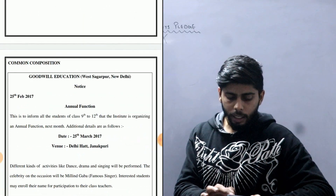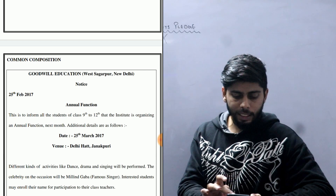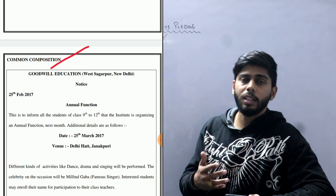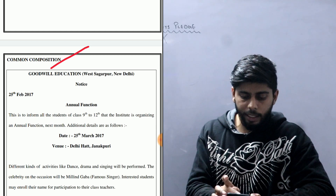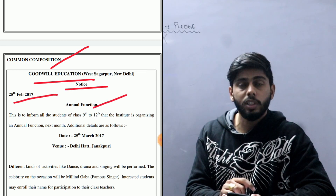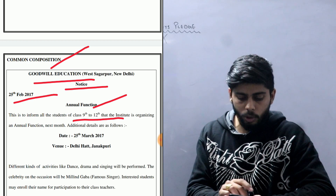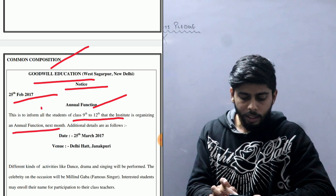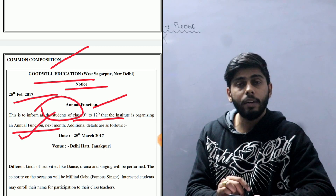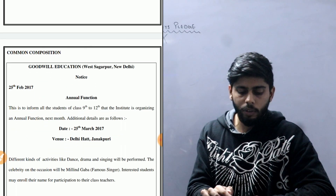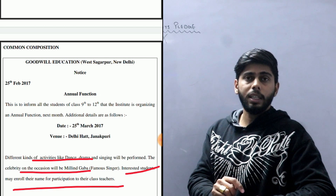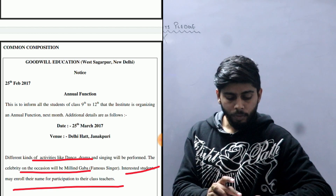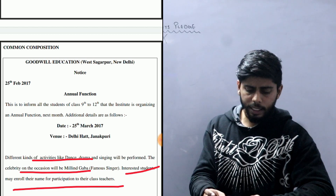If someone doesn't know how to draft a notice, I will give you a common composition for an event notice. For example, if Goodwill Education is organizing a function — you write the organization name 'Goodwill Education,' then the date, then the title 'Function' for the event notice. Then you mention who is being informed, such as 9th class students. Then what is being organized, the name of the event, the date, time, venue, and any additional information like the chief guest. Interested students can register. Finally, write the name and designation of the person writing the notice.